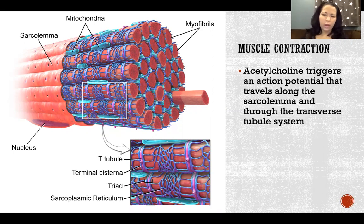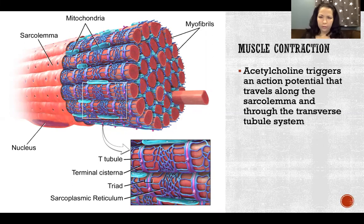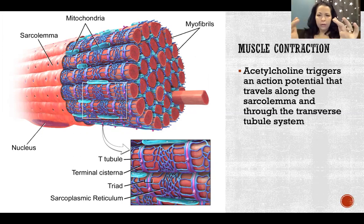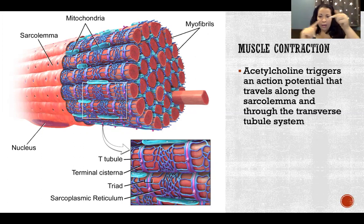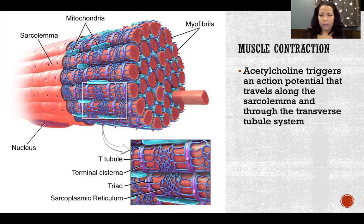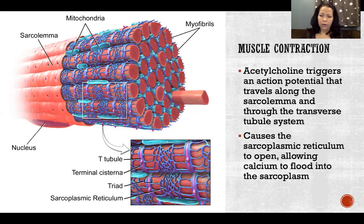Acetylcholine triggers an action potential in the muscle that travels along the sarcolemma and through the transverse tubule system. That action potential travels along the perimeter at the sarcolemma, and the T-tubules help the ions travel inward to the deeper myofibrils of the muscle, carrying that action potential to the depths of the muscle, not just along the surface.